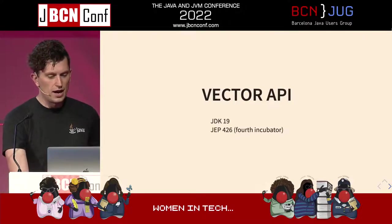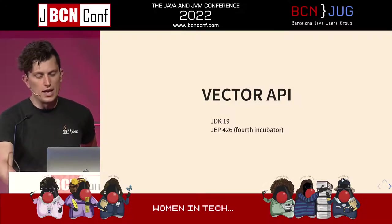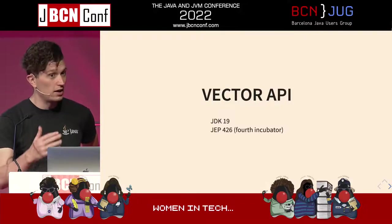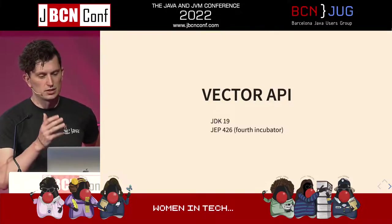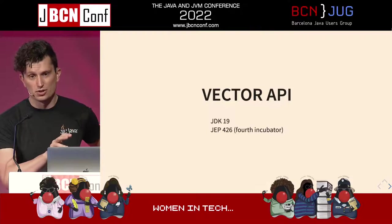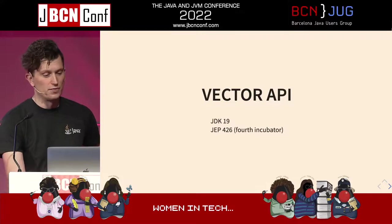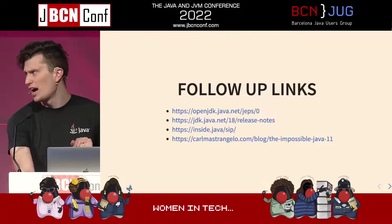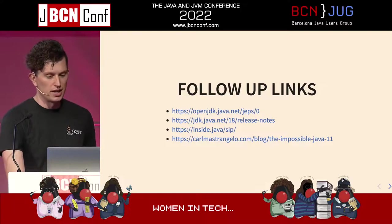The Vector API, useful for math-heavy work like image processing or speech processing, is now in its fourth incubator. It will continue in incubator status until Project Valhalla — which is changing the value type system — starts being included in the mainline, because Valhalla's changes will so fundamentally impact how the Vector API works that it doesn't make sense to finalize it until Valhalla is also delivered. Additionally, the Foreign Linker and Foreign Memory APIs have been moved to preview status in JDK 19.